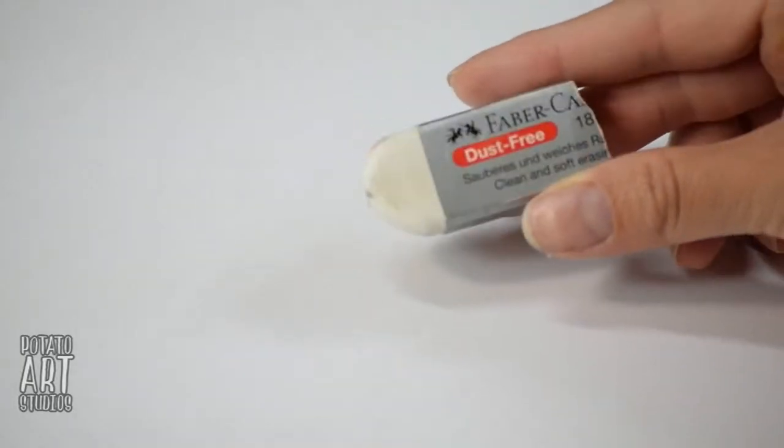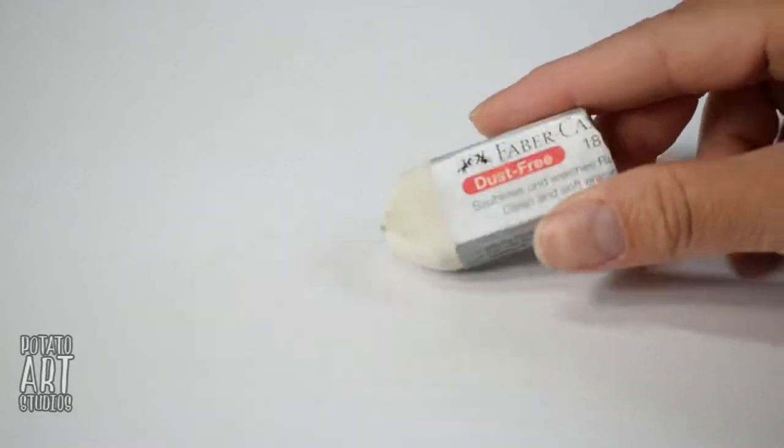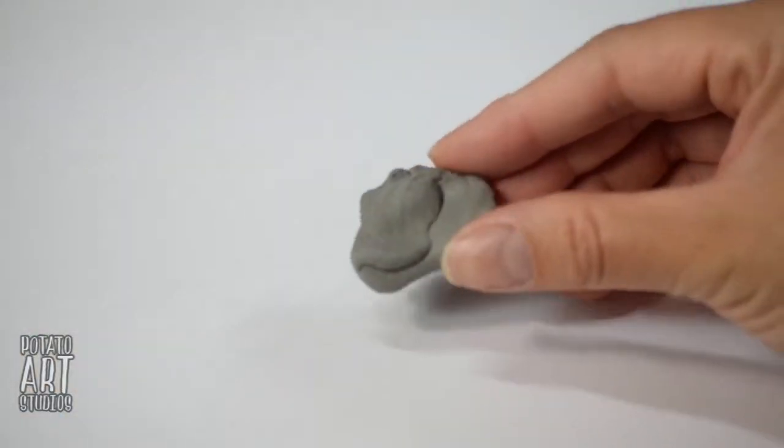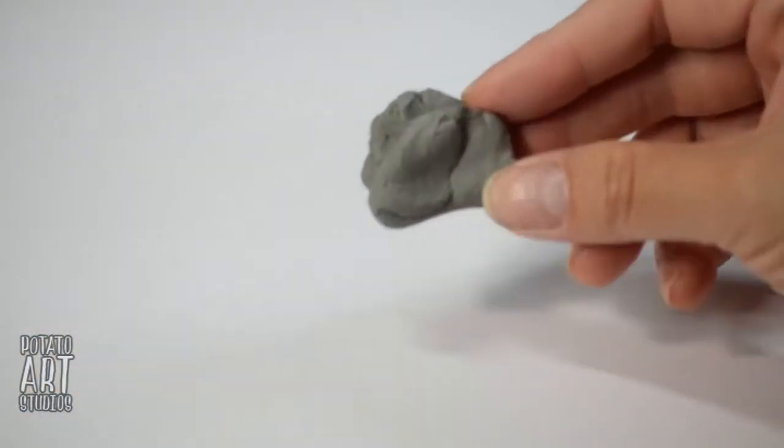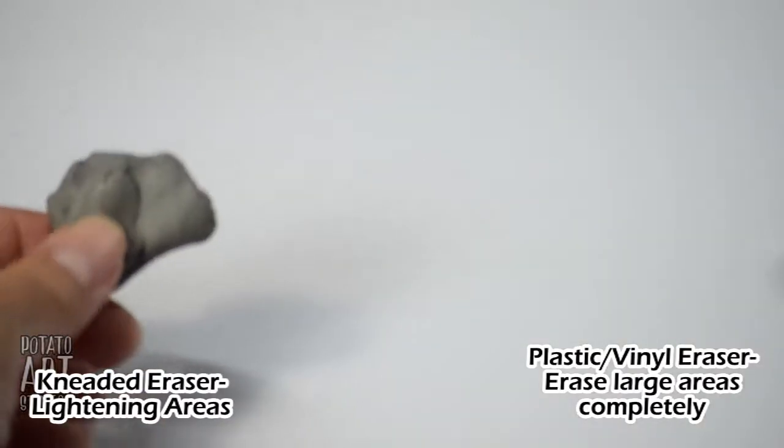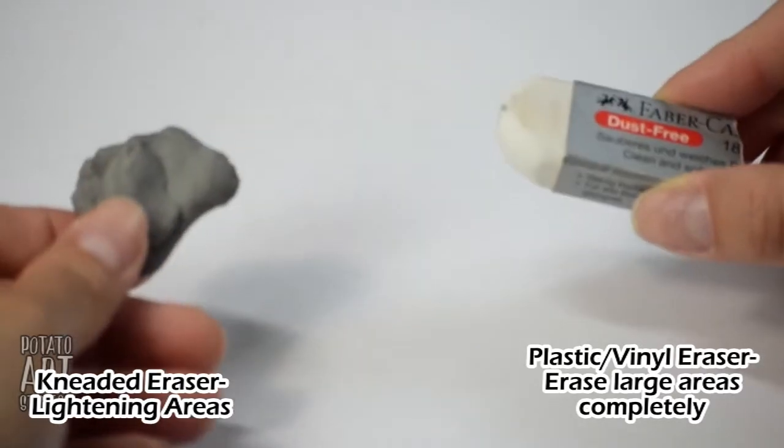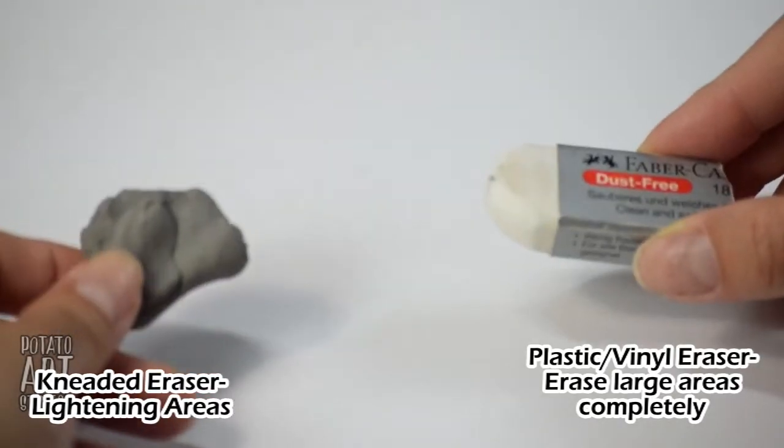With a regular plastic, hard plastic eraser, you can erase very clean lines. With the kneaded eraser, it's more for lightening areas rather than erasing areas completely. So I think it's good to have both in your arsenal, but I use them for two different things.